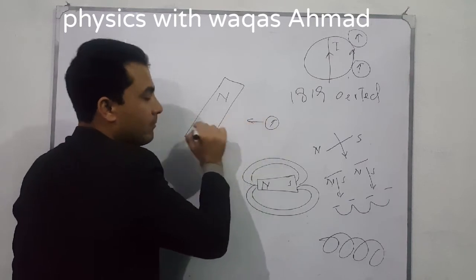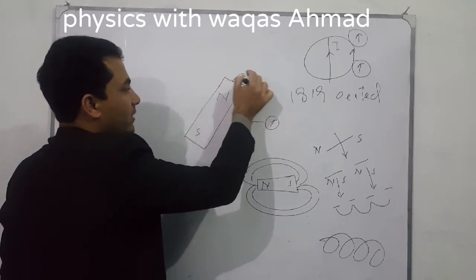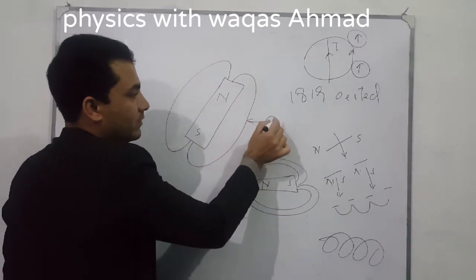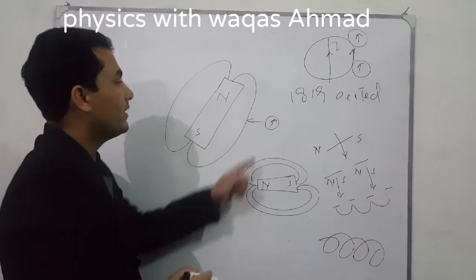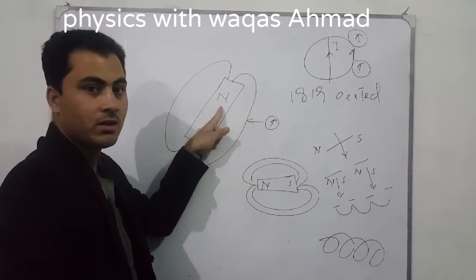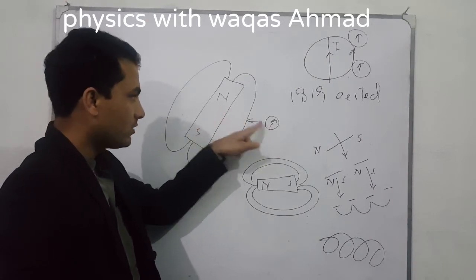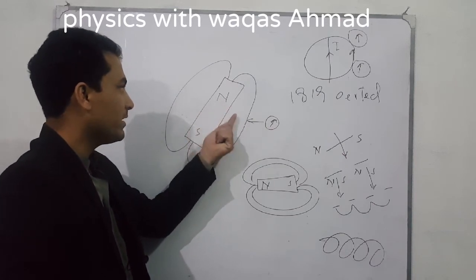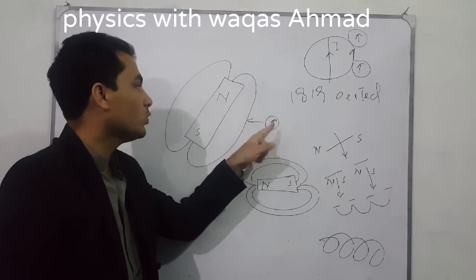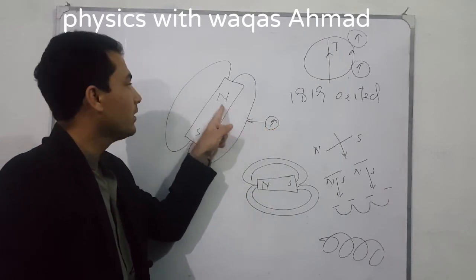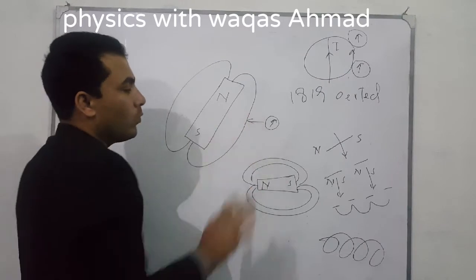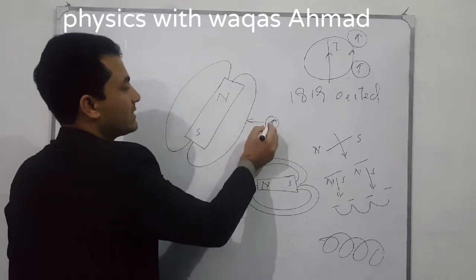For example, if I take a compass and bring it near a bar magnet, the needle of the compass will be deflected due to the magnetic field of the bar magnet. The compass is also a small tiny magnet, and the bar magnet's magnetic field is much stronger, so it deflects the compass needle.